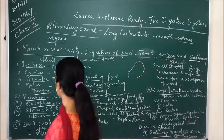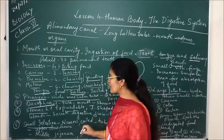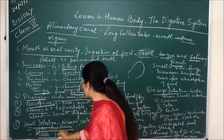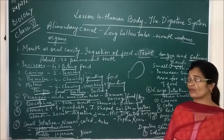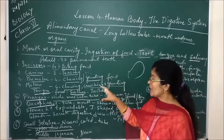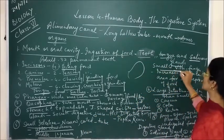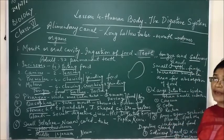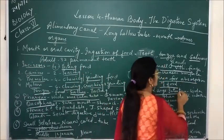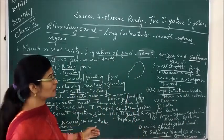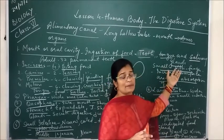After the stomach comes the small intestine, which is a narrow coiled tubular structure. It consists mainly of three parts: the upper duodenum, the middle part (jejunum), and the third layer called the ileum. The main function of the small intestine is digestion and especially absorption of food. The small intestine has villi-like structures which help to increase the surface area for absorption of food.